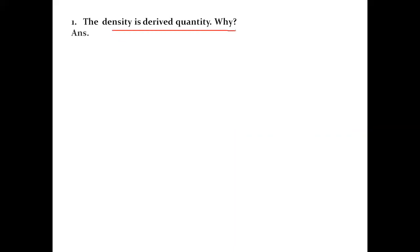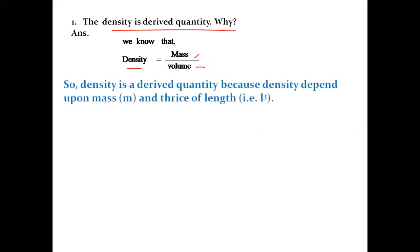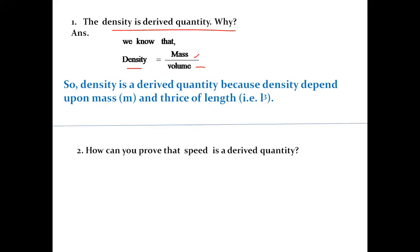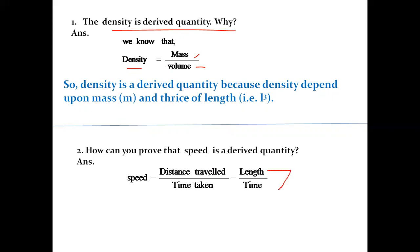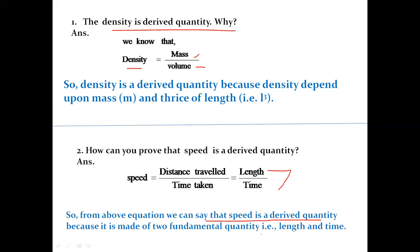Density is a derived quantity because density equals mass divided by volume. Mass is a fundamental quantity, and volume is a derived quantity because it depends upon the size of the length. So density depends upon mass and size of the length. Speed is also a derived quantity: speed equals distance traveled divided by time taken. Distance means length, and both length and time are fundamental quantities — so speed is a derived quantity made of two fundamental quantities: length and time.